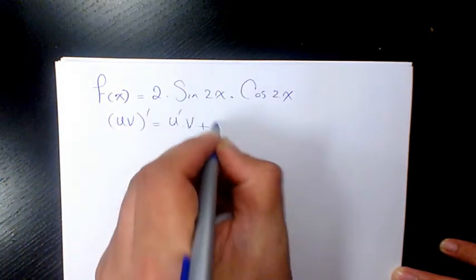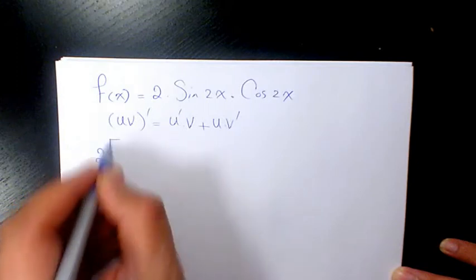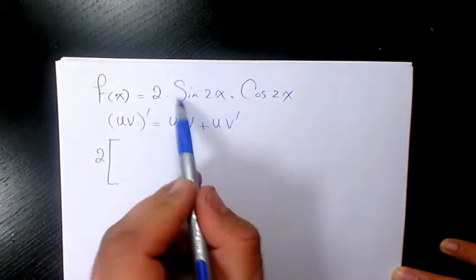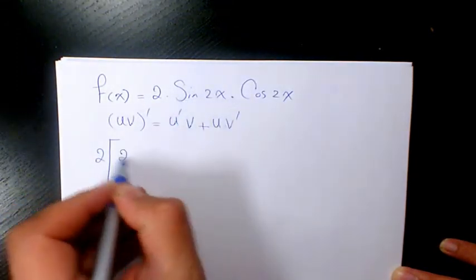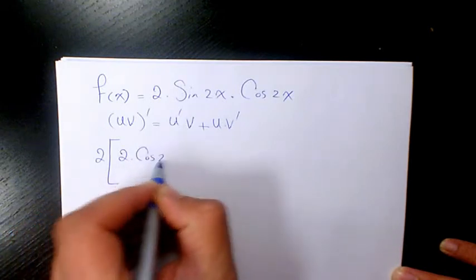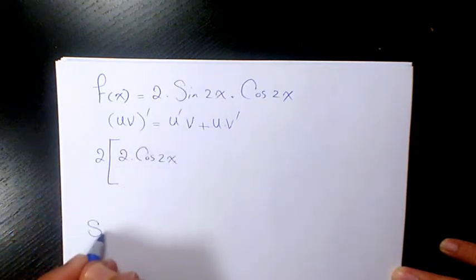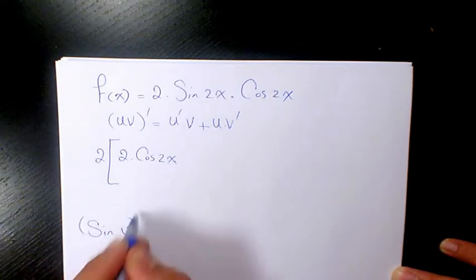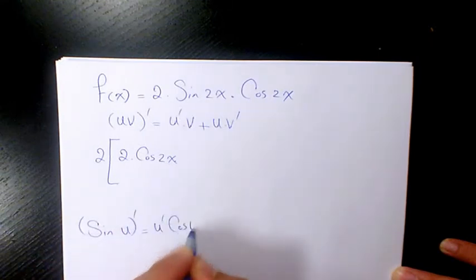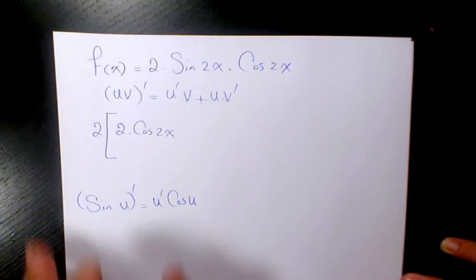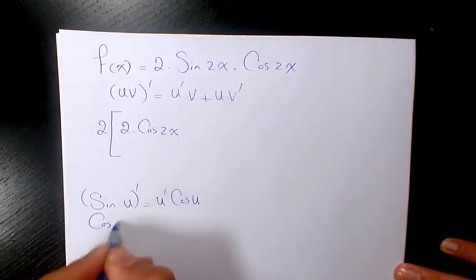2 is 2, derivative of sine 2x will be 2 times cosine 2x. Why? Because sine u, the derivative of sine u will be u prime cosine u, and derivative of cosine u is going to be negative u prime sine u.